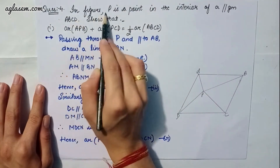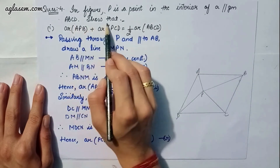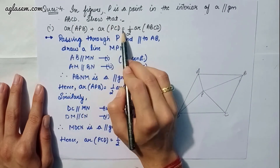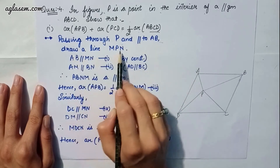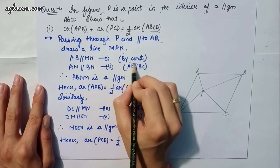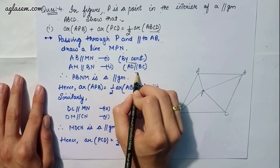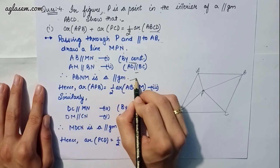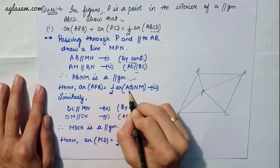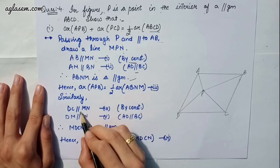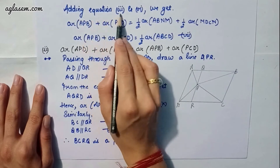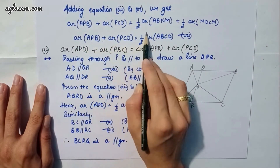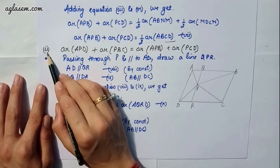Question 4 says: P is a point in the interior of parallelogram ABCD. Show that area APB plus area PCD equals half of area ABCD. Through P, parallel to AB, draw line MPN. AB is parallel to MN by construction, and AM is parallel to BN by AD parallel to BC, so ABMN is a parallelogram. Area APB equals half of area ABMN — equation 3. MDCN is also a parallelogram, so area PCD equals half of area MDCN. Adding all equations, area APB plus area PCD equals half of area ABCD.